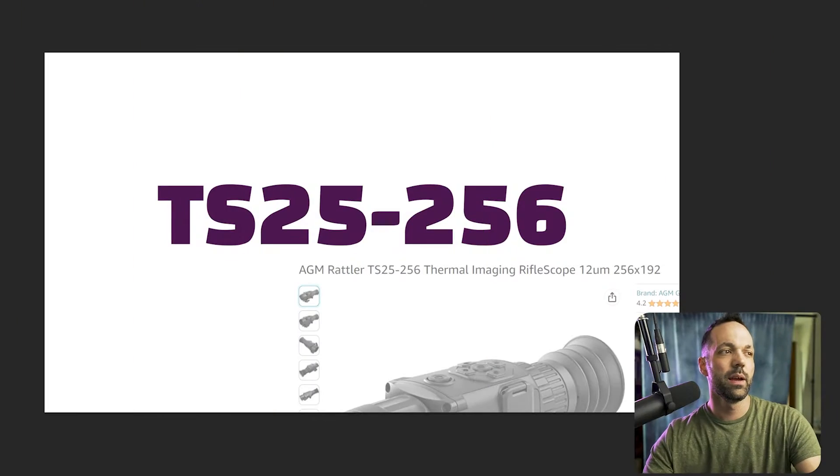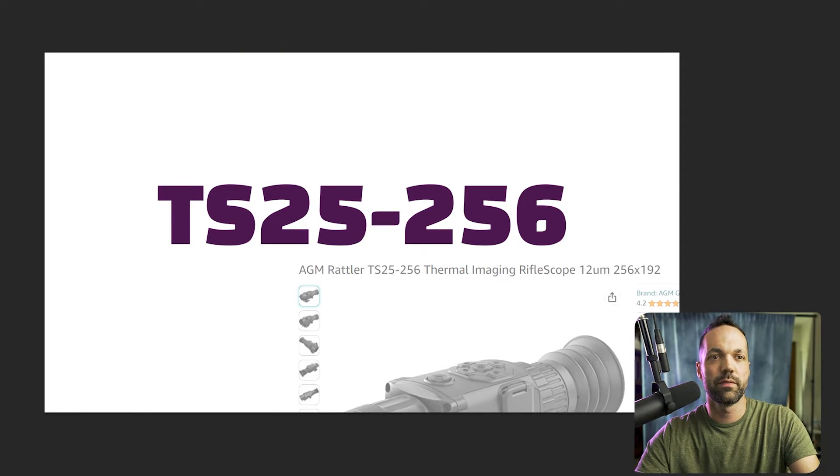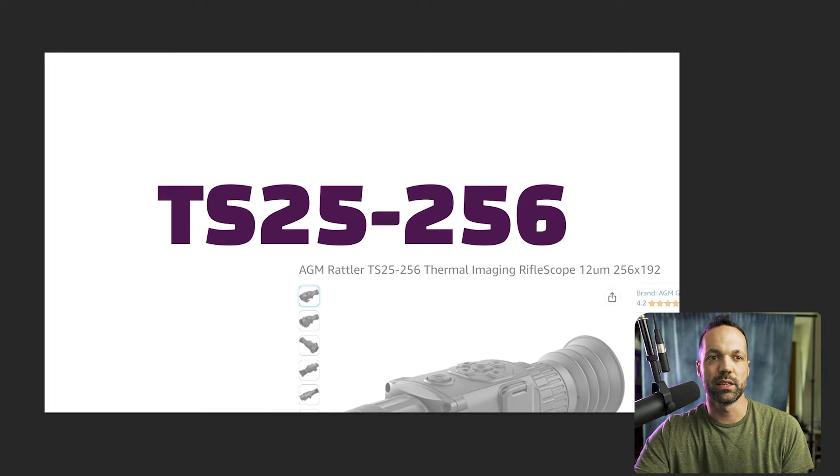The thermal sensor resolution is the big one. AGM basically uses three different platforms: the 256, the 384, and the 640. So how do you know which scope has which sensor? If you look at the naming conventions of their scopes, you can figure it out really easily.